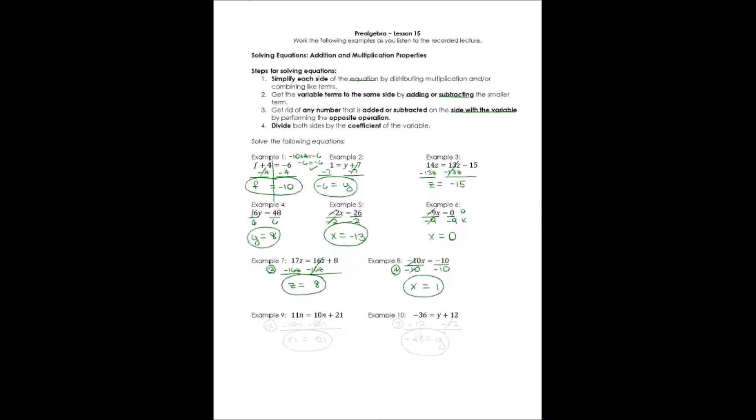Number 9, example number 9, I have variables on both sides. I have 11n equals 10n plus 21. That means that I have to start with step number 2, get the variable terms to the same side. I'm going to work with the smaller variable term, which is 10n. By subtracting it, because it was positive, I'll use a negative 10n to get rid of it. And now I say 11n minus 10n is n. On the right, the 10n minus 10n cancels. What's left? Positive 21. And since n is all by itself, that's my answer.